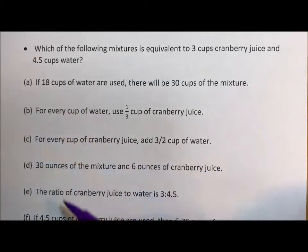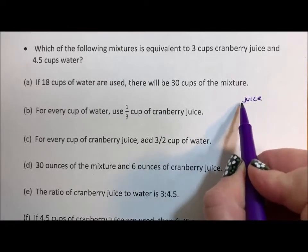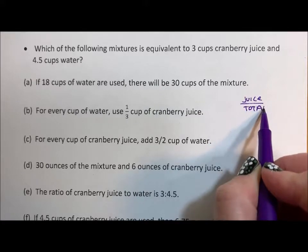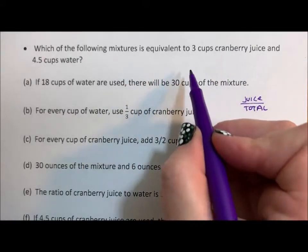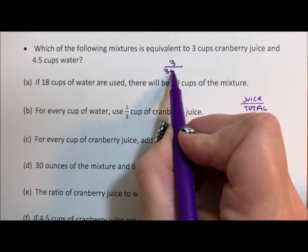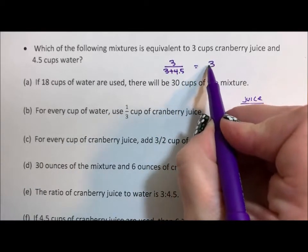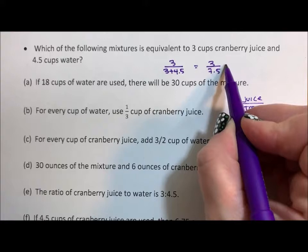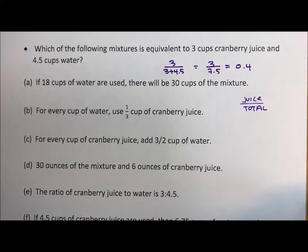The question is of all of these different concentrations which are the same. Now concentration means total juice to total liquid. So for this one if we have 3 cups of cranberry juice to 4.5 cups of water, it's 3 cups of cranberry juice to 3 plus 4.5 cups of liquid which is 3 to 7.5, which we can write as a fraction or bring down to 40 percent cranberry juice.